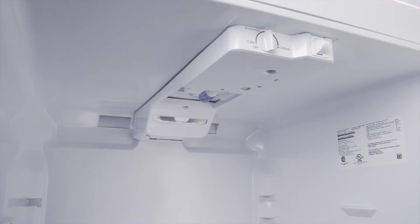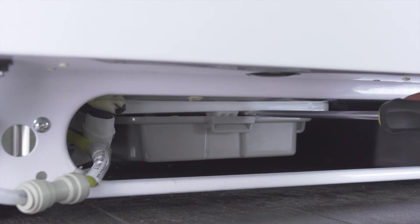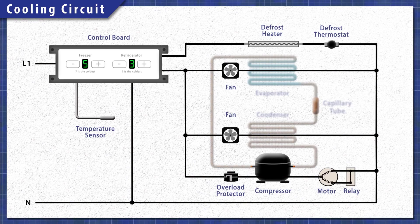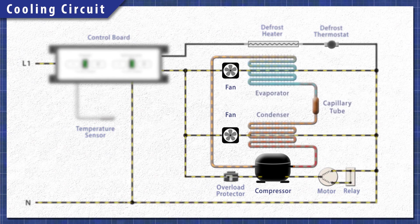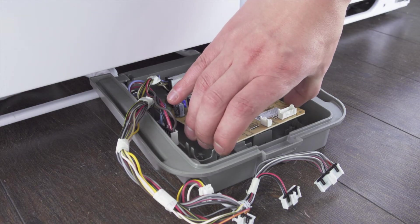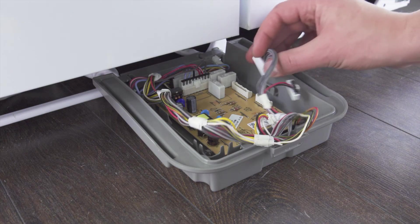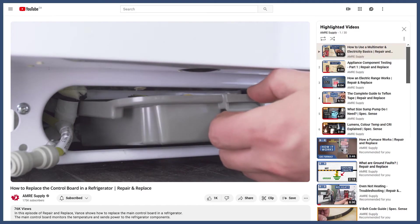Some models use a defrost control board that triggers the defrost cycle. This is located in the control module. Other models will have a main control board which is usually at the back or in a small box behind the kick plate. A faulty control board might not send power to the defrost circuit. The board itself can't be easily tested. If you've eliminated all other problems, then replace the control board. You can see these repairs in the videos linked below.